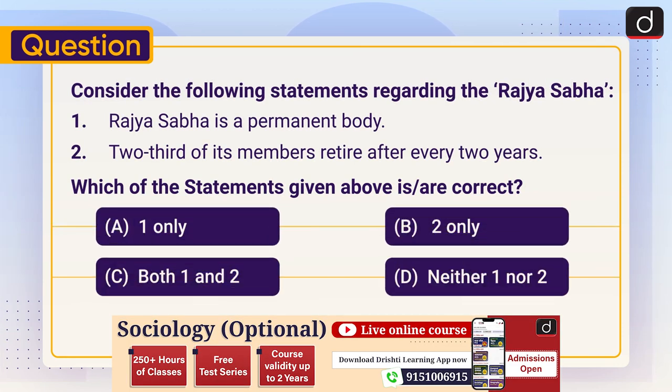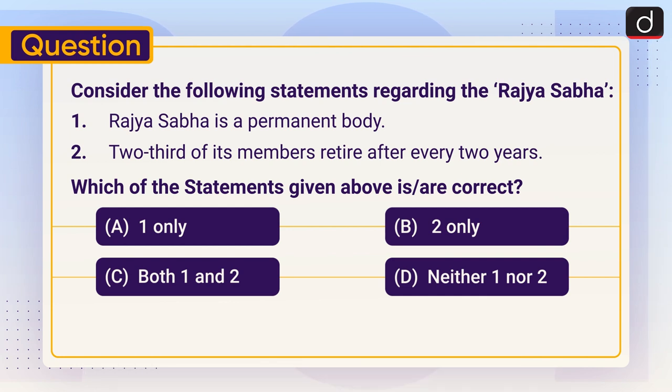Consider the following statements regarding the Rajya Sabha: One — Rajya Sabha is a permanent body. Two — Two-thirds of its members retire after every two years. Which of the statements given above is or are correct? (A) One only, (B) Two only, (C) Both one and two, or (D) Neither one nor two. Send the answer to this question in the comment section.